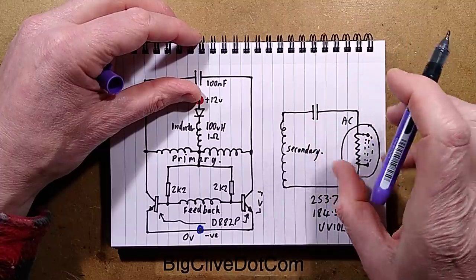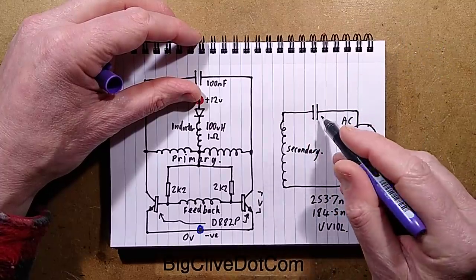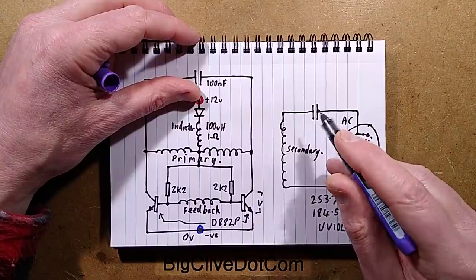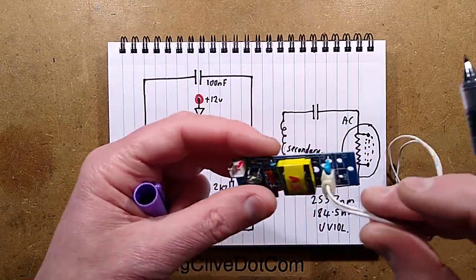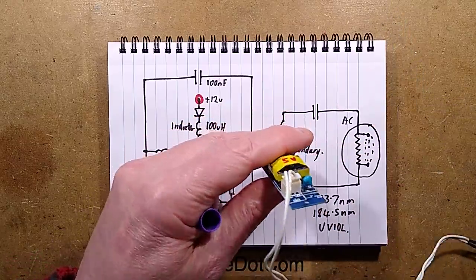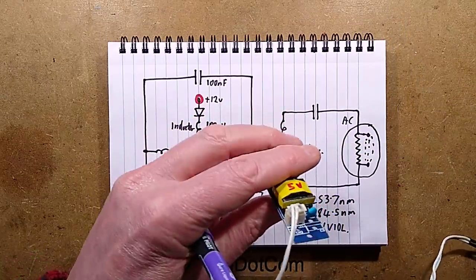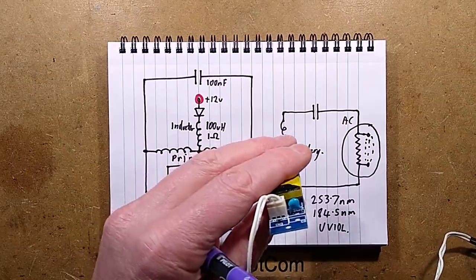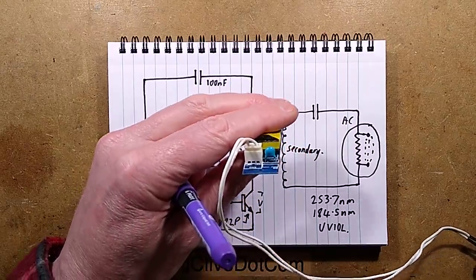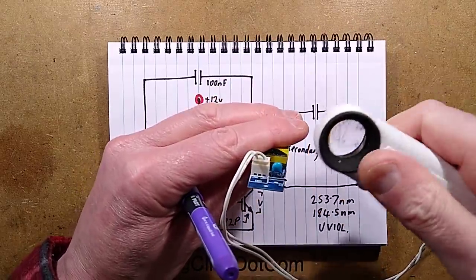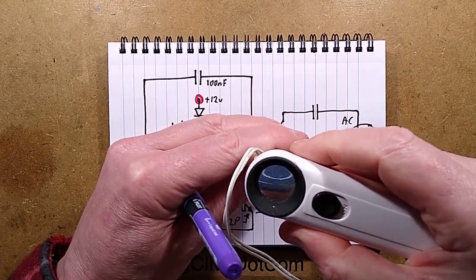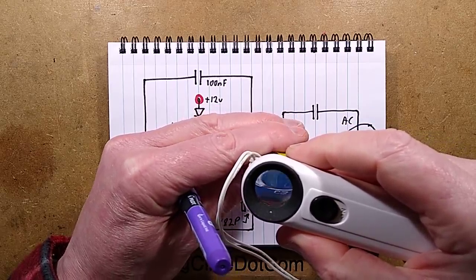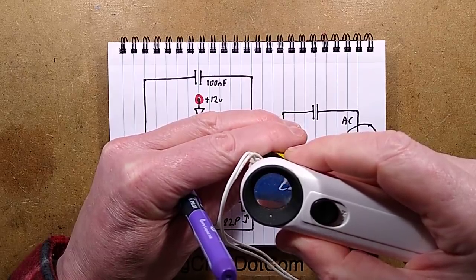This is what makes the Royer circuit special - it converts the DC to AC at fairly high frequency. Because it's high frequency, this output capacitor that limits the current by varying the amount of current that can flow in each half of the waveform can effectively be very, very small.